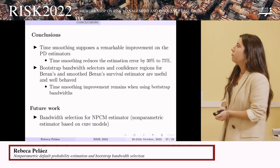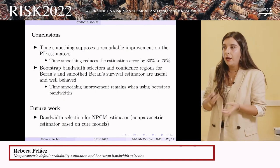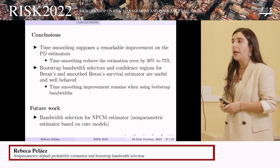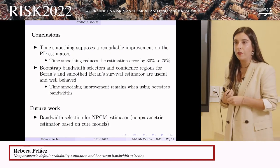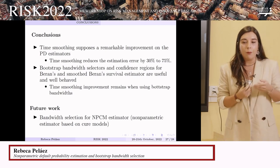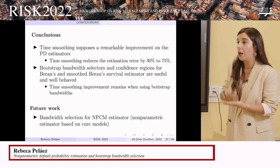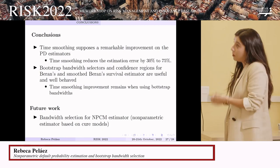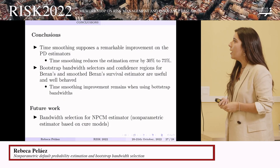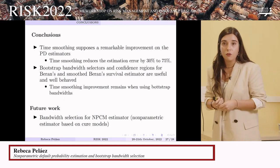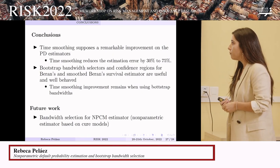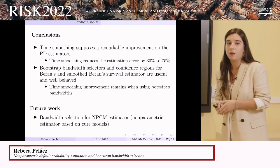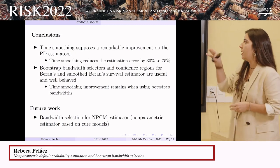To conclude: the time variable smoothing we proposed for the probability of default estimators represents a remarkable improvement. This improvement remains when using bootstrap bandwidths. The behavior of the bootstrap bandwidth selector is reasonable in the scenarios studied, and the confidence regions are well behaved — with the confidence regions based on the smooth Beran estimator performing better, as shown in the last figures.